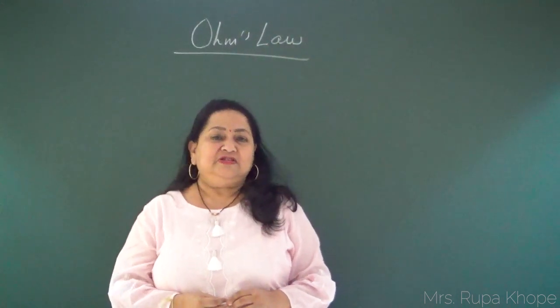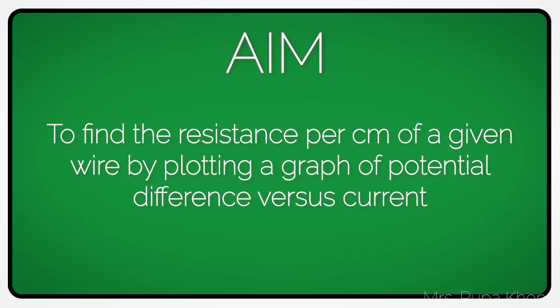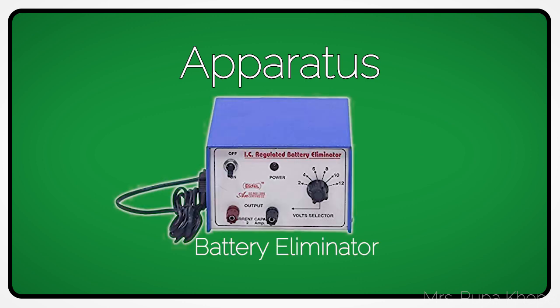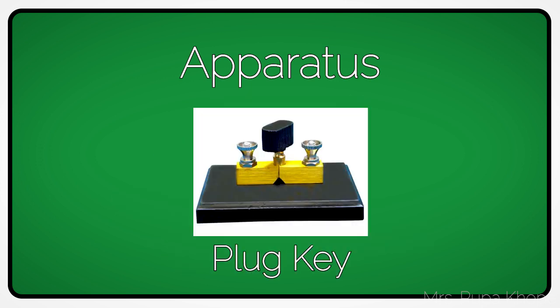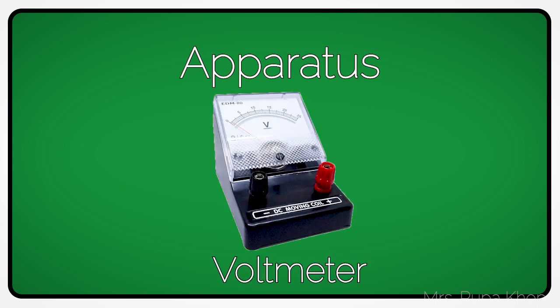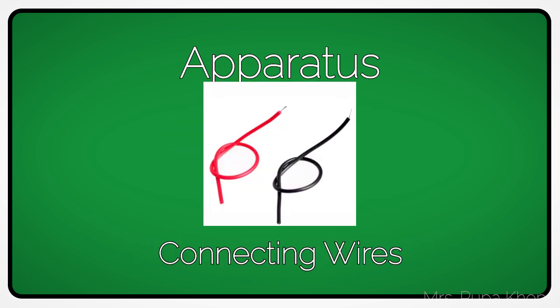Today we will be performing an experiment named Ohm's Law. The aim of the experiment is to determine the resistance of the wire per centimetre by plotting a graph of potential difference (voltage) versus current. The apparatus required is: battery eliminator, rheostat, plug key, milliammeter, voltmeter, wire of particular length, and connecting wires.